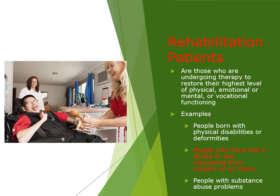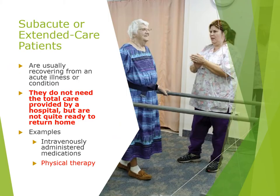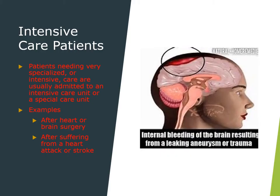Rehabilitation patients are undergoing therapy to restore their highest level of physical, emotional, mental, or vocational functioning. Examples include people born with disabilities, those who have had a stroke, those recovering from surgery or injury, and people with substance abuse problems. Subacute or extended care patients are recovering from an acute illness but are not yet ready to return home — examples include IV medications and physical therapy. Intensive care patients needing specialized care are admitted to an ICU or special care unit, for example following heart or brain surgery or after a heart attack or stroke.